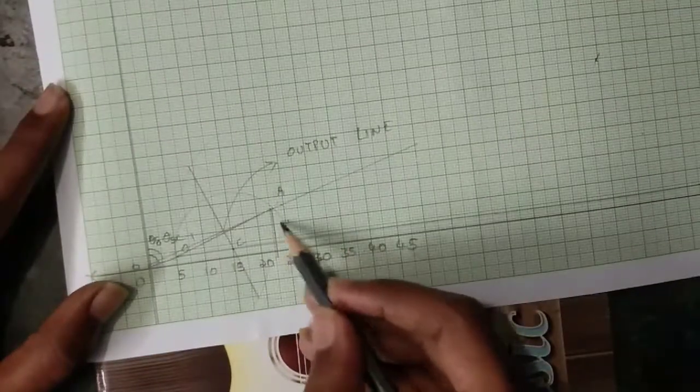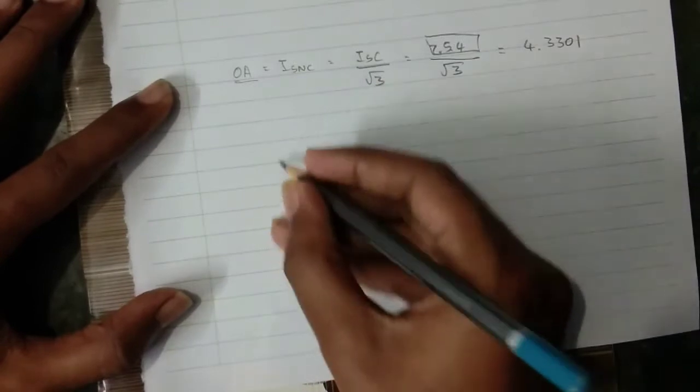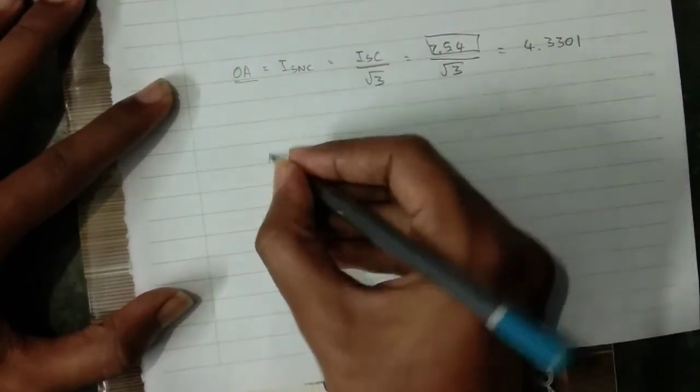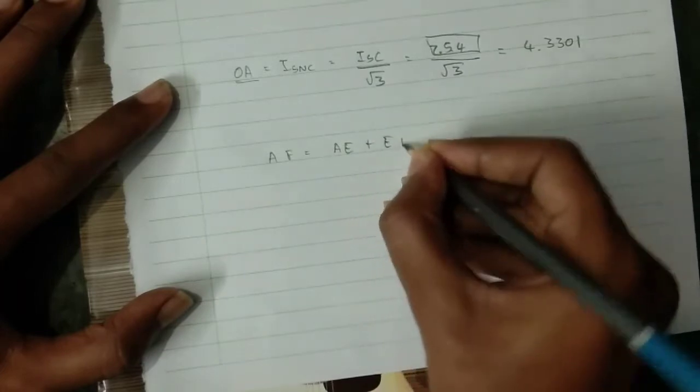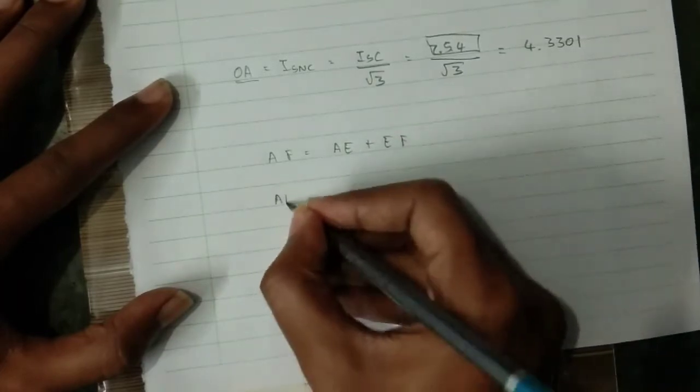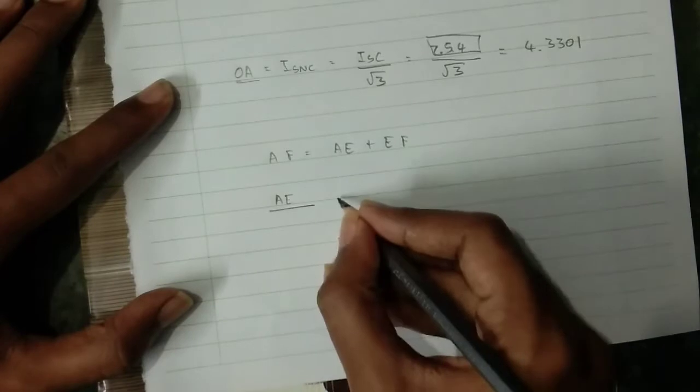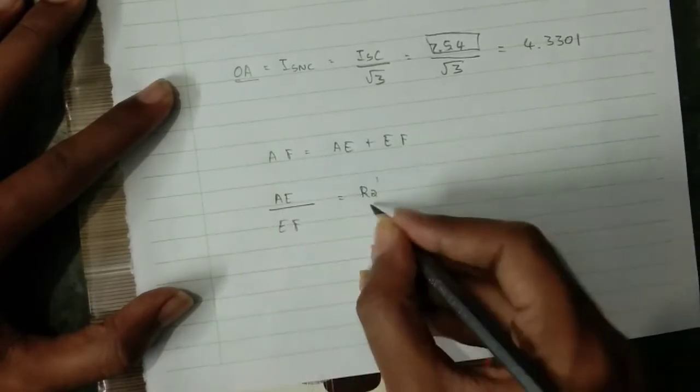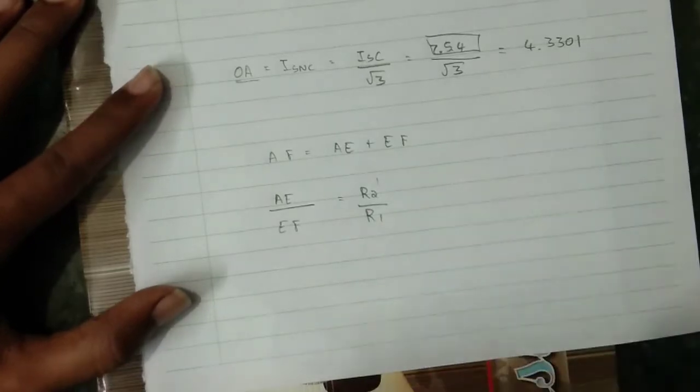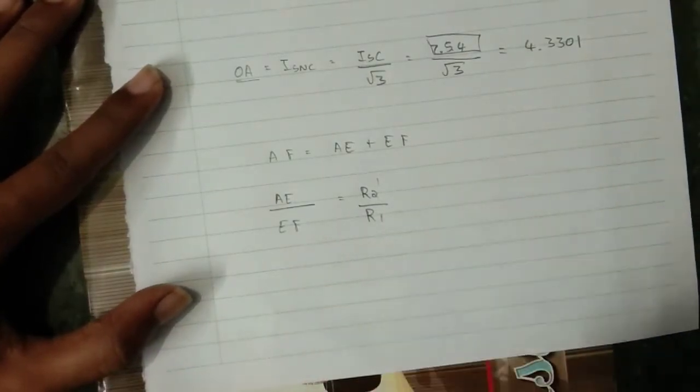To find the location of the point E here, there is a formula. A is equal to AE plus EF. AE is equal to R₂' EF by R₁. This is the formula to calculate E.